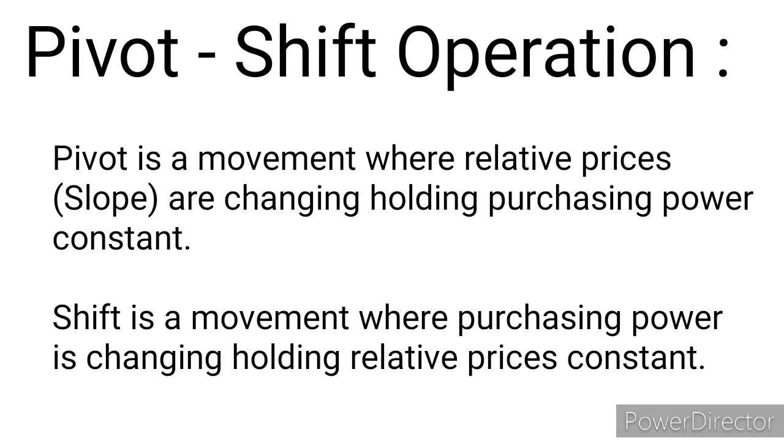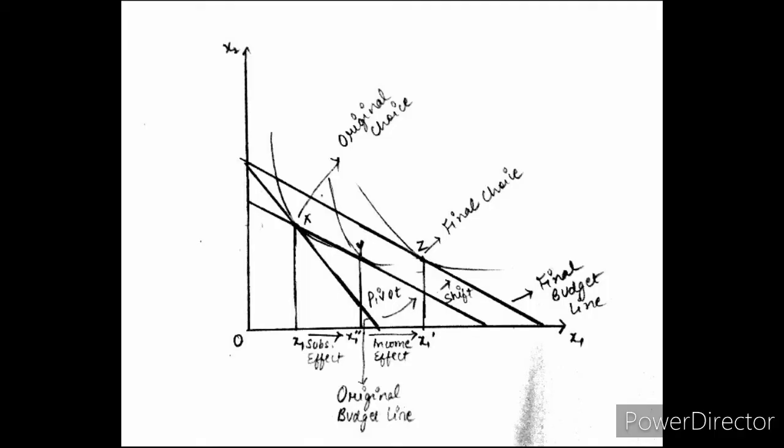So let us properly understand the pivoted line. The pivoted line intersects the original budget line AB at the original choice X1, Y1 — so the original choice is just affordable on the pivoted line. The slope is changing, the relative prices are changing, but the purchasing power is constant. Obviously if the price is decreasing, the purchasing power of a person will increase, but here we are keeping the purchasing power constant.